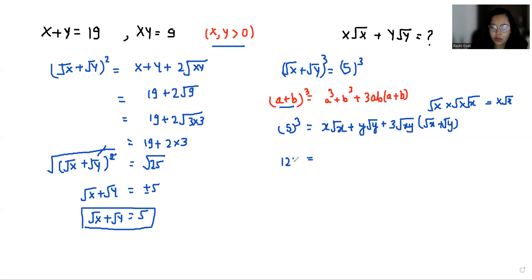So 125 equals x root x plus y root y plus 3 times the value of xy is 9, 3 root 9 times, and the value of root x plus root y is 5.